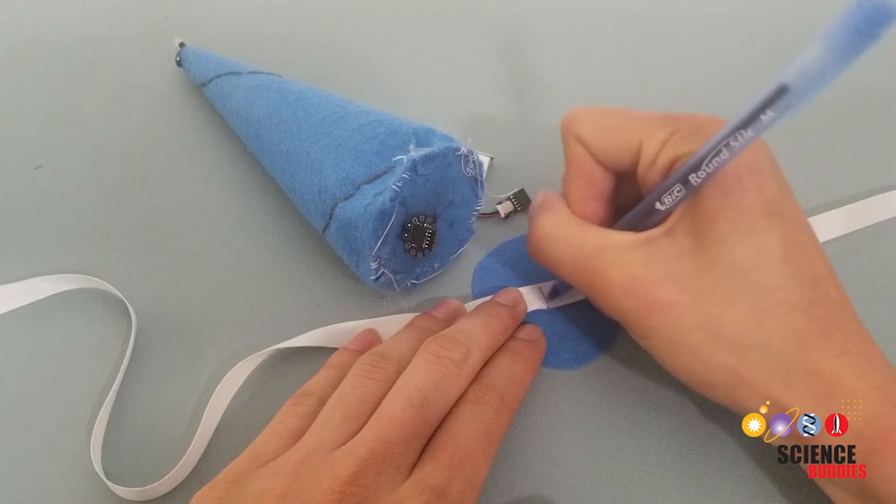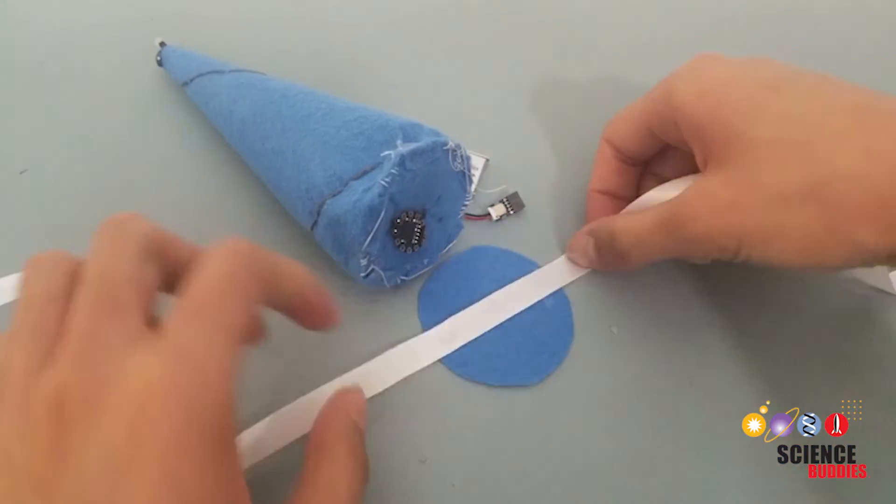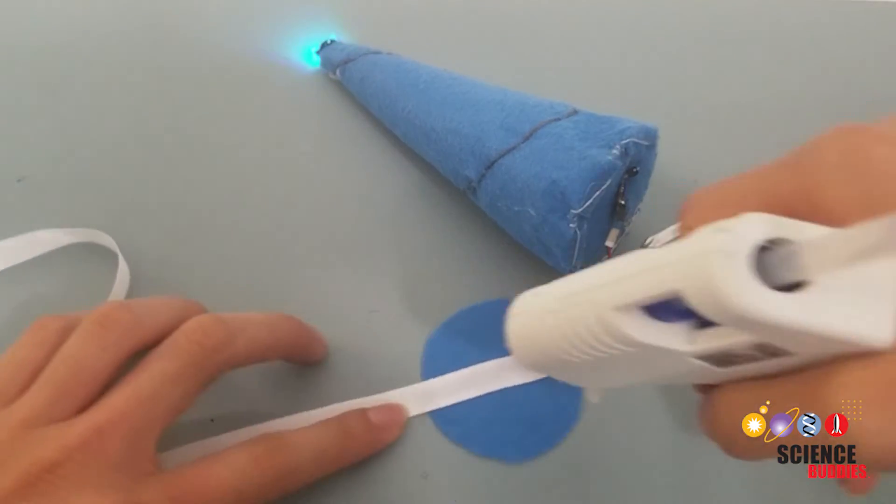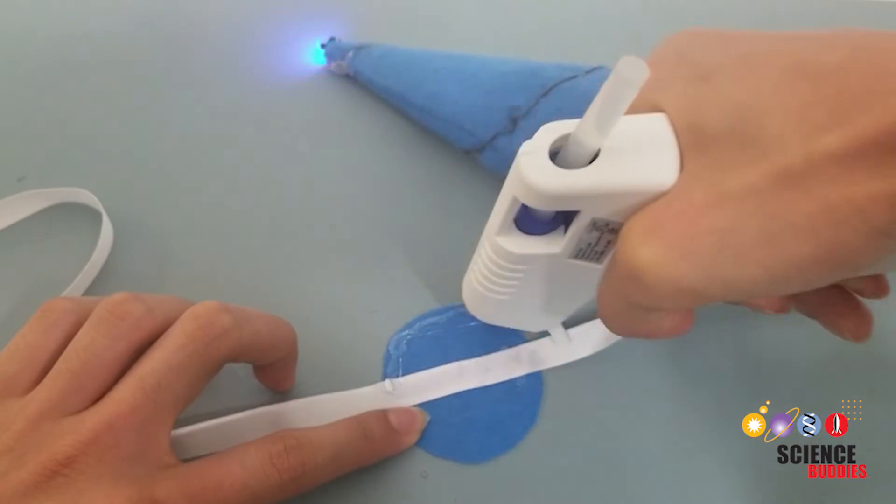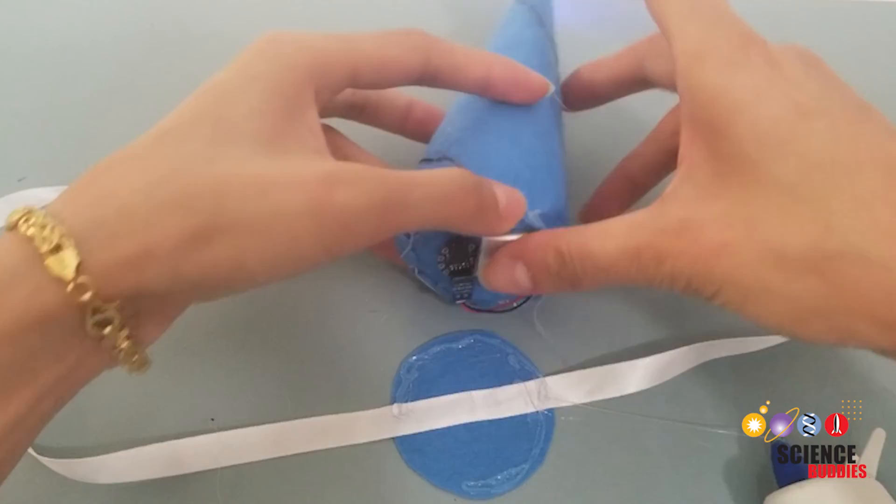Cut a piece of ribbon approximately 3 feet long and hot glue the midpoint onto piece B. Remember to plug your LiPo battery back in. You can place hot glue around the edges of the bottom circle piece. You should leave a gap in your glue so that you can remove the LiPo battery later if you would like.